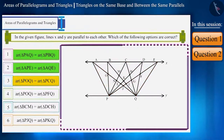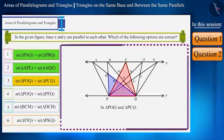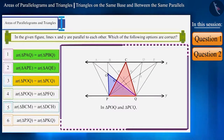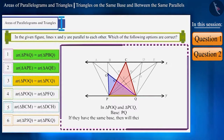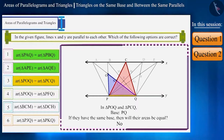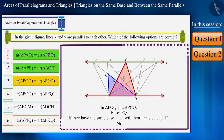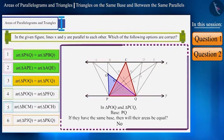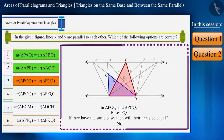For the third option, look at triangle POQ and triangle PCQ carefully. They have a common base PQ. However, these two triangles are not situated between the same parallel lines. Therefore, the areas of these triangles will not be equal, so this option is incorrect.